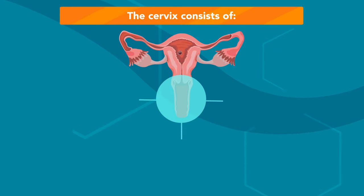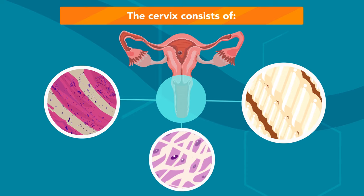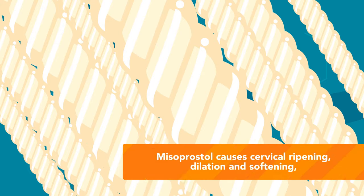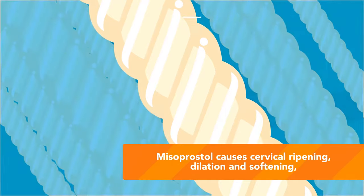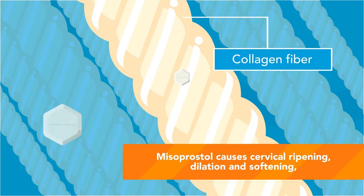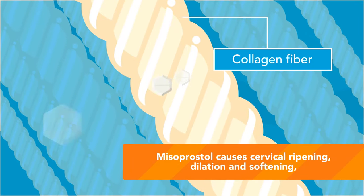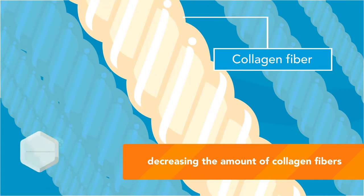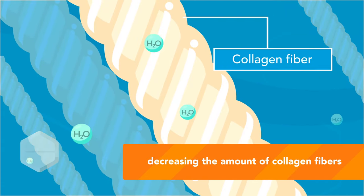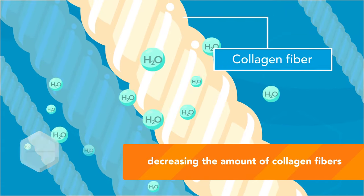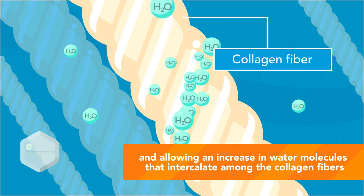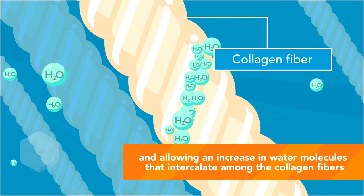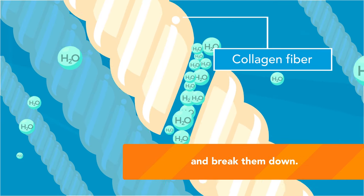The cervix consists of smooth muscle, connective tissue, and collagen. Misoprostol causes cervical ripening, dilation, and softening by decreasing the amount of collagen fibers and allowing an increase in water molecules that intercalate among the collagen fibers and break them down.